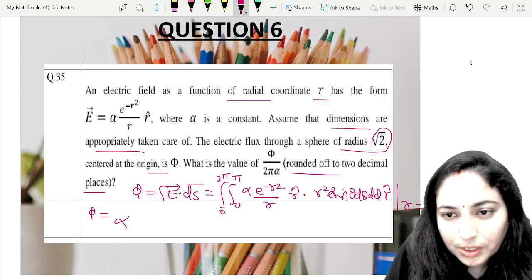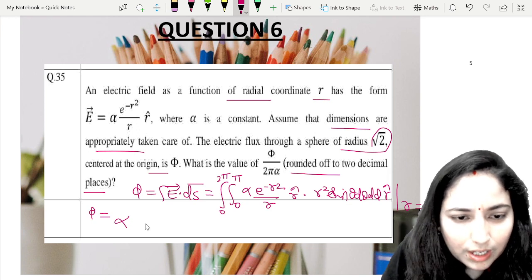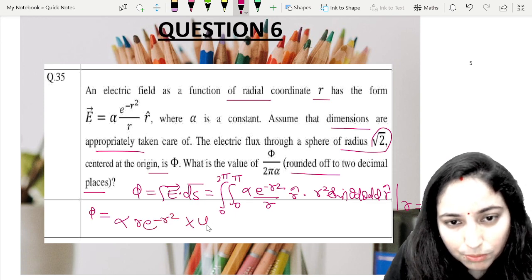Put r equals √2. First, the r term is taken out, so alpha r e to the power minus r squared times 4π.